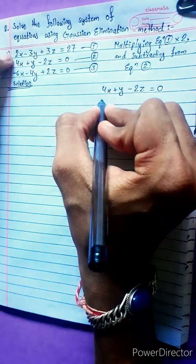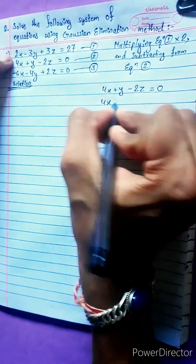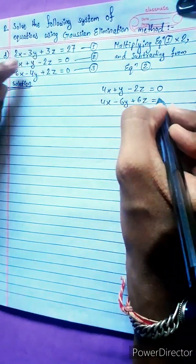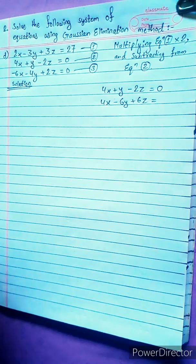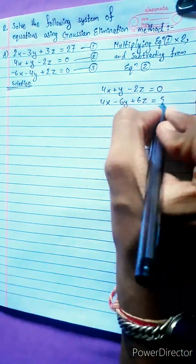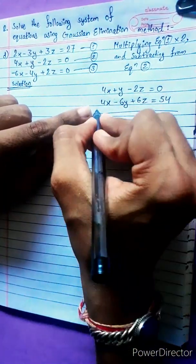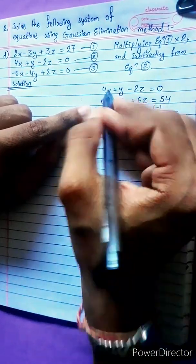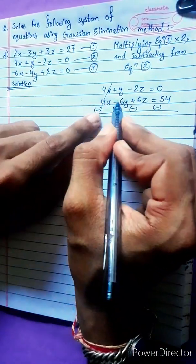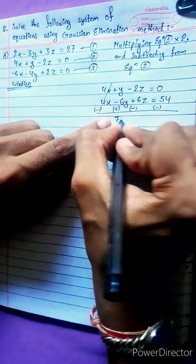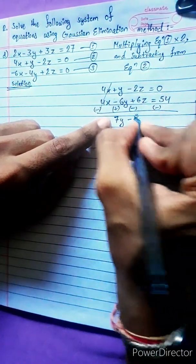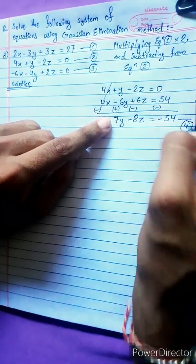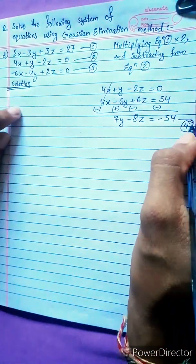Multiply by 2: 4x minus 6y plus 6z equals 54. Now subtract — signs change, terms cancel — we get 7y minus 8z equals minus 54. This is our equation 4.